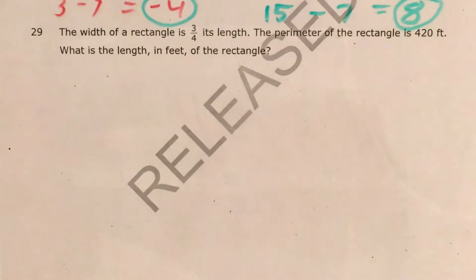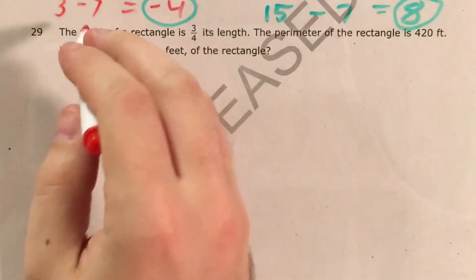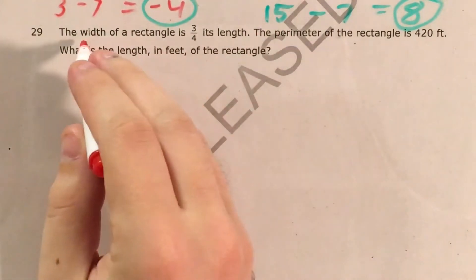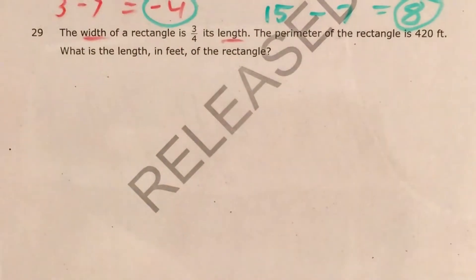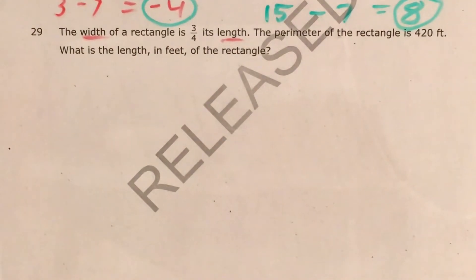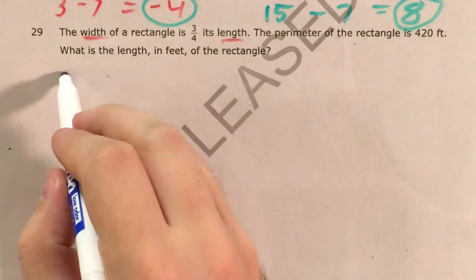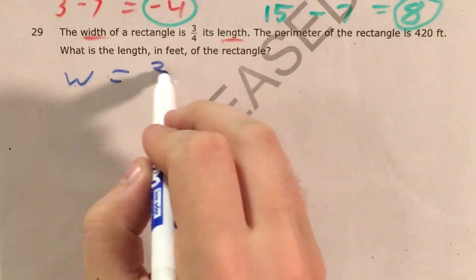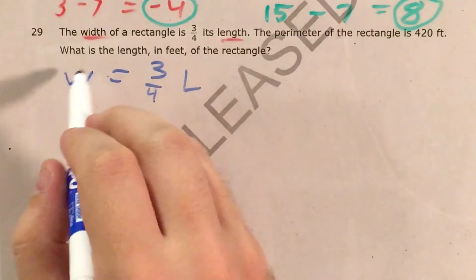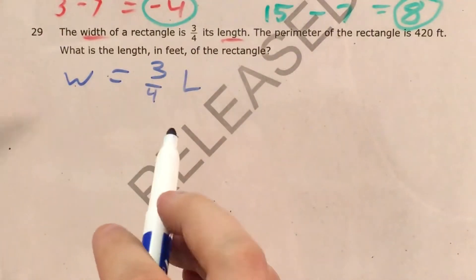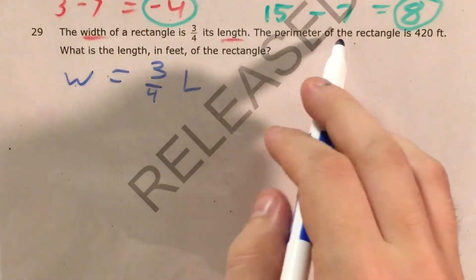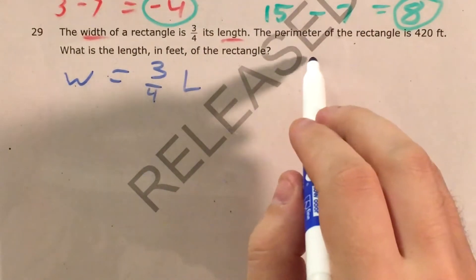Now the reason why we need to use systems and system principles to solve this is that we have two things about this rectangle that we don't know, the length and the width. What we do know is first the width, so I'll call that W, is three-fourths of its length, so the width is three-fourths of its length, that's how we translate that directly, and the perimeter of the rectangle is 420 feet.